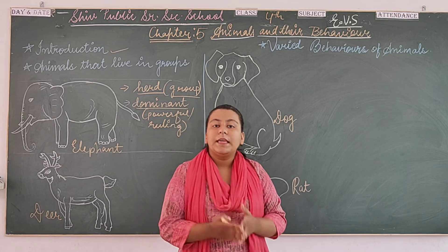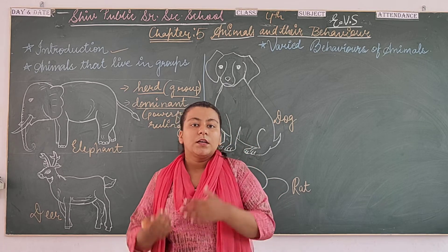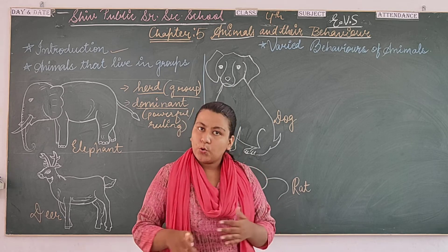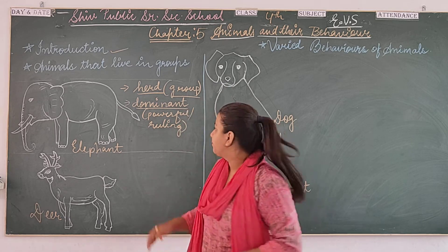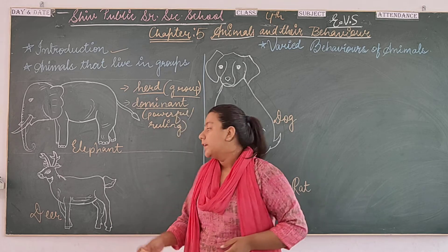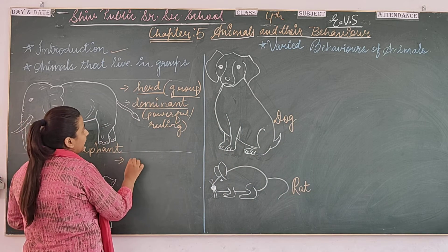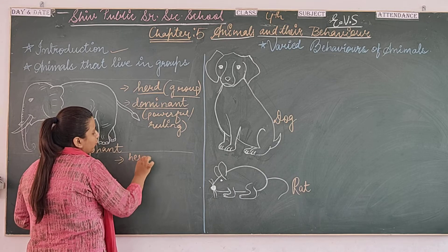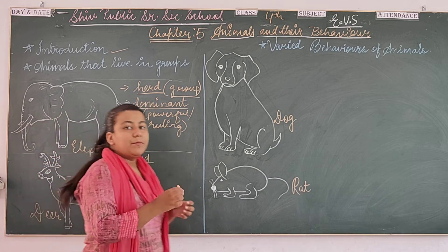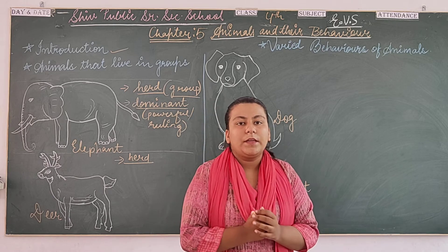The other female elephants in the herd work to care for the babies. The male elephant, at about 14 to 15 years of age, leaves the group. Next is the deer. The deer also live in an integer group, which we also call a herd.